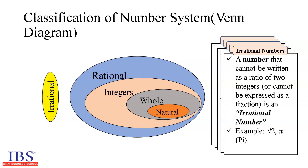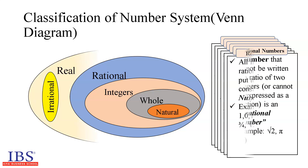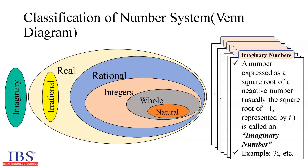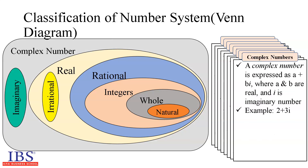Square root of 2, pi, and the golden ratio phi — which is widely used in stock market analysis — are a few examples of irrational numbers. Real numbers are all rational numbers and irrational numbers put together. Imaginary numbers are numbers expressed as a square root of a negative number. Complex numbers are polynomials expressed as a plus bi, where a and b are real numbers and i is an imaginary number. For example, 2 plus 3i.